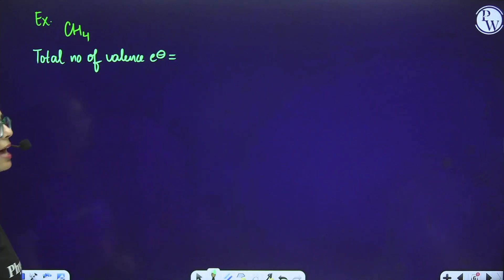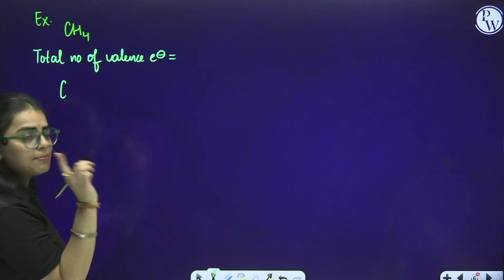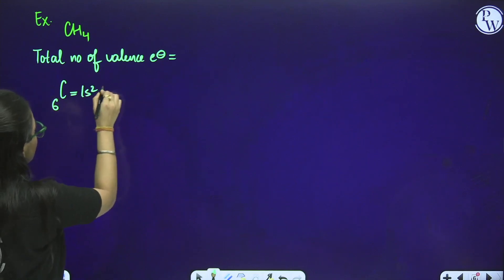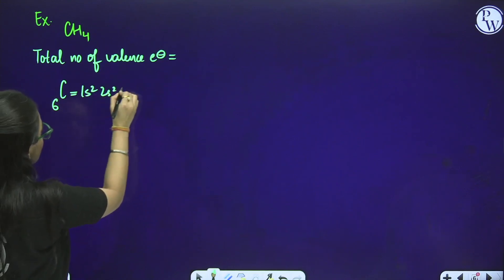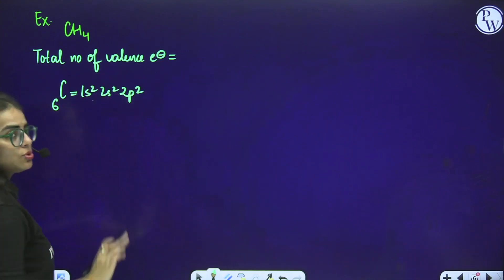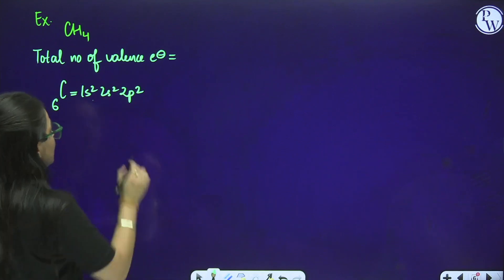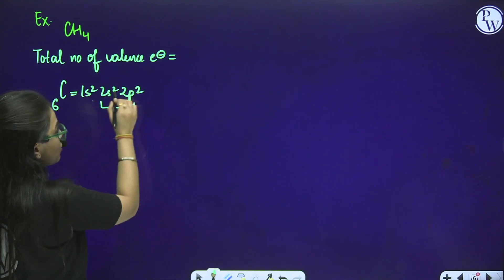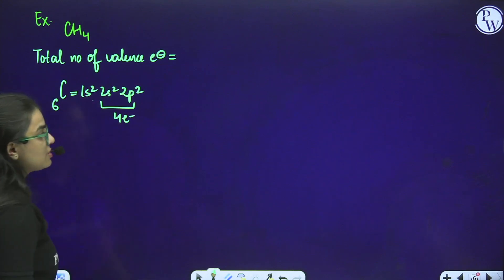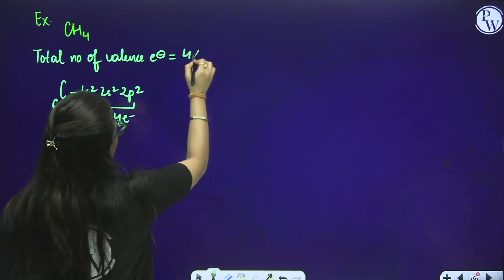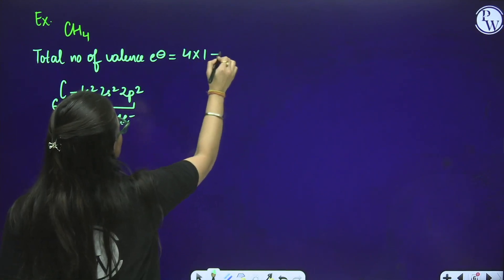There is a special rule: in the case of hydrogen, take valence electrons as 7. Coming back to CH4, it is 7 into 4 hydrogen. The total comes out to be 4 plus 28, which is 32 electrons. One more rule: for carbon, it is 4 valence electrons from 1s2, 2s2, 2p2 — the outermost second shell has 4 electrons.